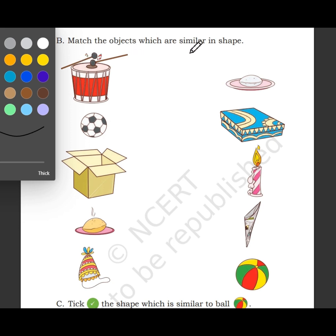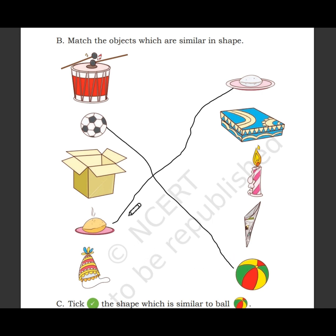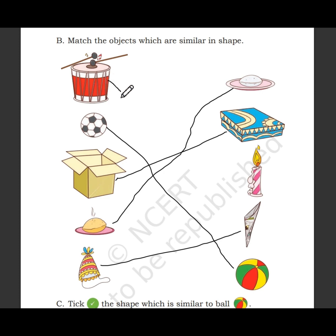Match the objects which are similar in shape. Poori and idli — both are round. Ball and this ball. This box and this box. Birthday cap and this one — both have a top and the base is flat. And this one: drum and candle.